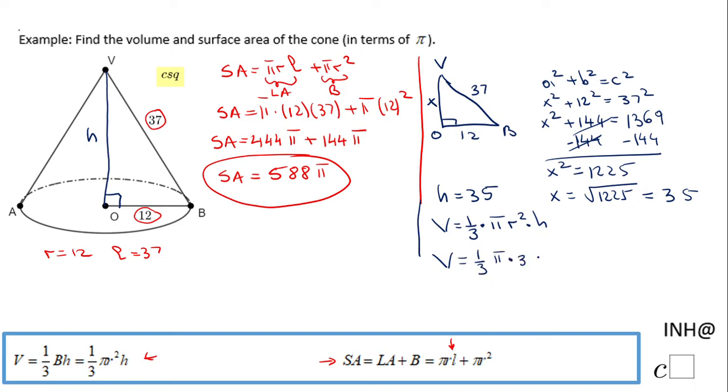The radius is 12, so 12² times 35. So we're going to have here V equals 1/3 π, 12² is 144 times 35. And now we can simplify here: 3 goes into 144, 48 times. So the volume will be 48 times 35.